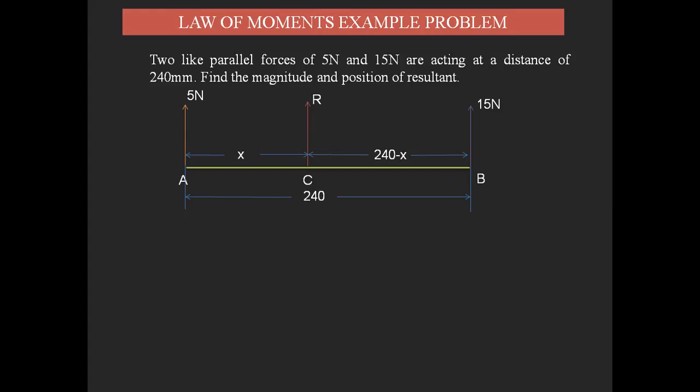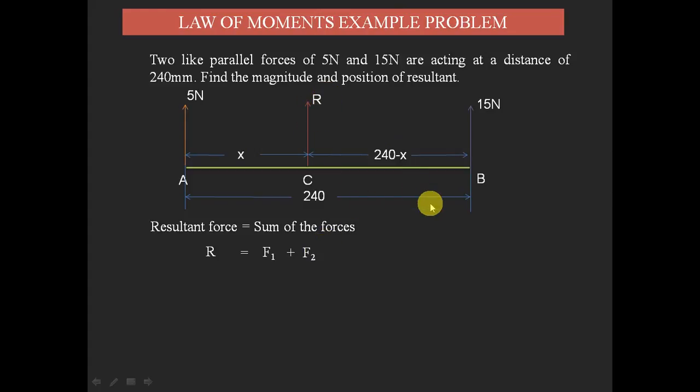Now we find the magnitude of the resultant. The resultant force equals the sum of the forces acting on the body: R = F1 + F2. We add the two forces because they are acting in the same direction. When forces act in the same direction, we add them; when in different directions, we subtract. Since both forces act upward, R = 5 + 15 = 20 newtons.